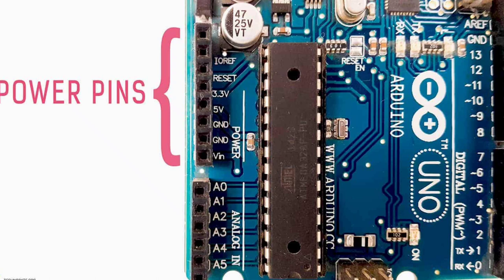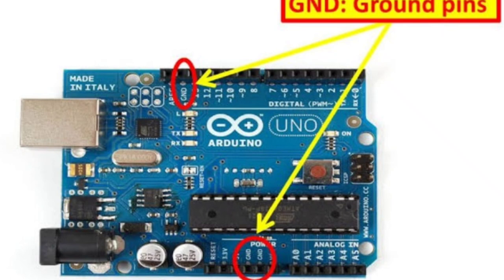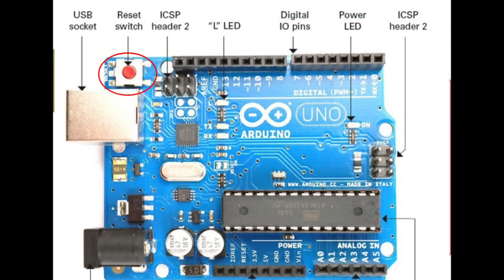The next pin is 3.3V. This pin of the board is used to provide a supply of 3.3V which is generated from the voltage regulator on the board. These pins are required as per our convenience, where voltages are mentioned particularly in a range, then we need to use this pin. Next one is Ground — this pin of the board is used to ground the Arduino board. There are more than one ground pin on Arduino. Reset — this pin of the board is used to reset the microcontroller.